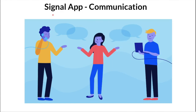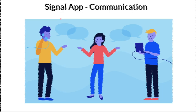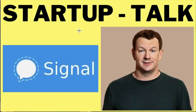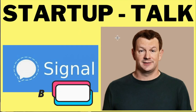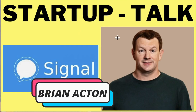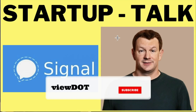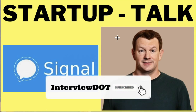So what is exactly Signal app? Signal app is an end-to-end encrypted communication application where people can talk to each other. It's available both on Android and iOS, which is similar to WhatsApp. The only difference is Signal app is open source. The co-founder of Signal is Brian Acton, who also founded WhatsApp.